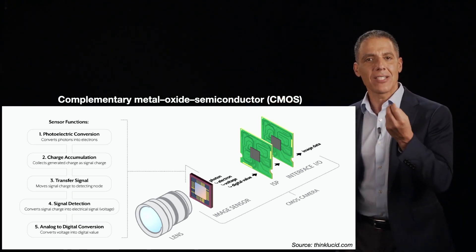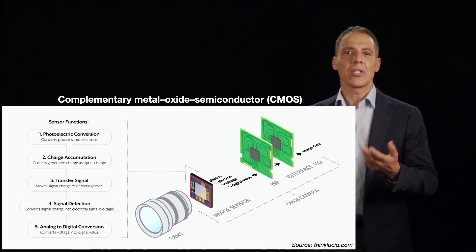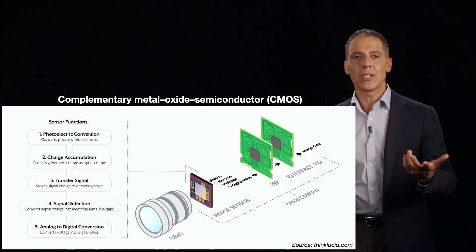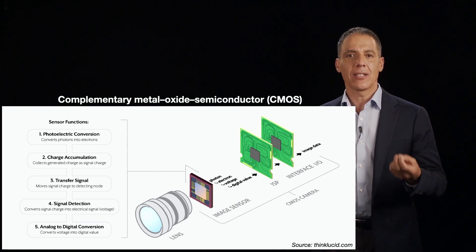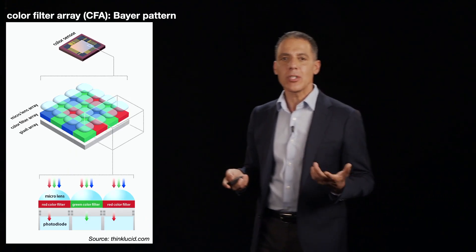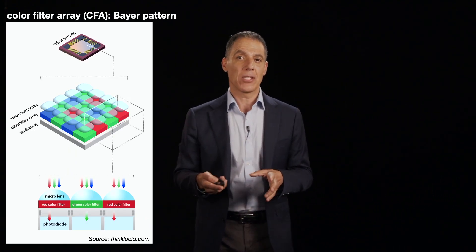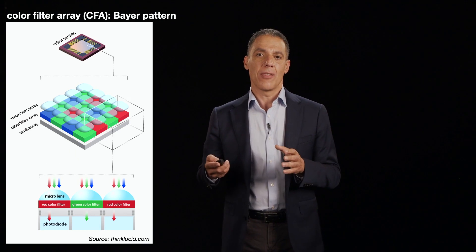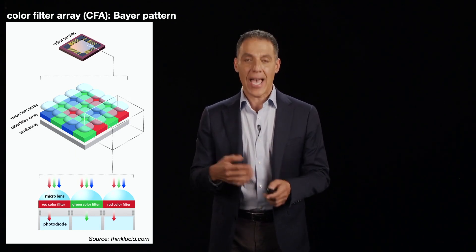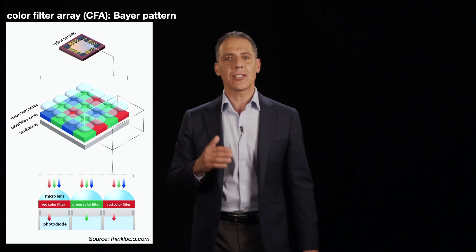These sensors have little wells which correspond to pixels, and we read out the amount of light that strikes. One of the most important things, because it really impacts the quality and nature of a digital image, is how we record in color.